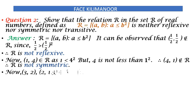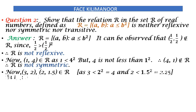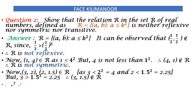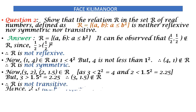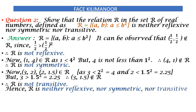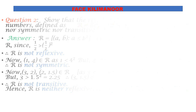Now (3,2) belongs to R and (2,1.5) belongs to R, as the relation exists. But 3 is greater than (1.5)², which equals 2.25. Therefore (3,1.5) does not belong to R. Therefore R is not transitive. Hence R is neither reflexive nor symmetric nor transitive.